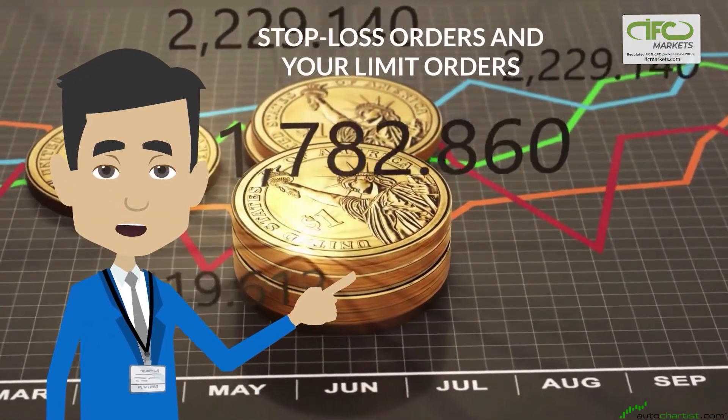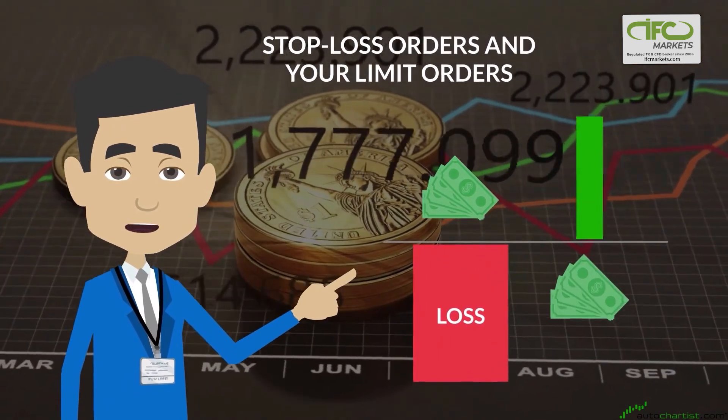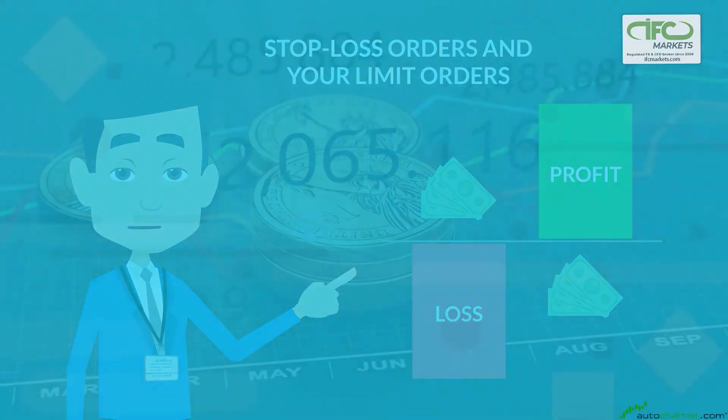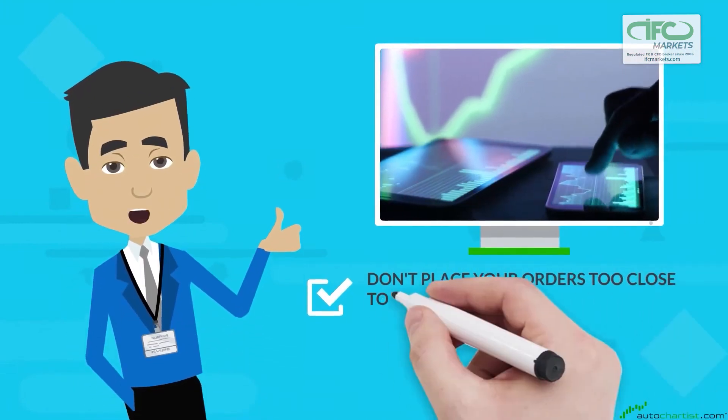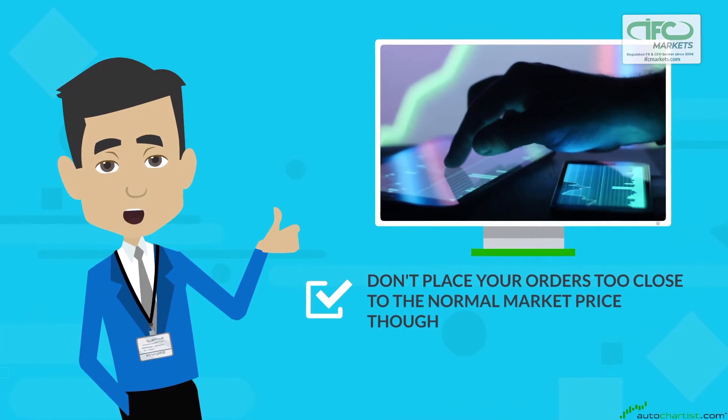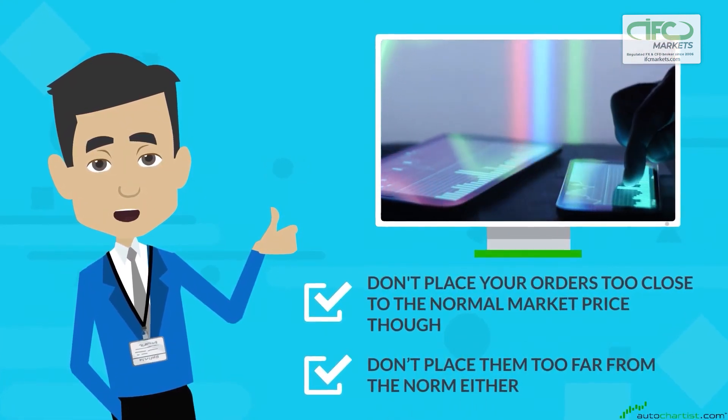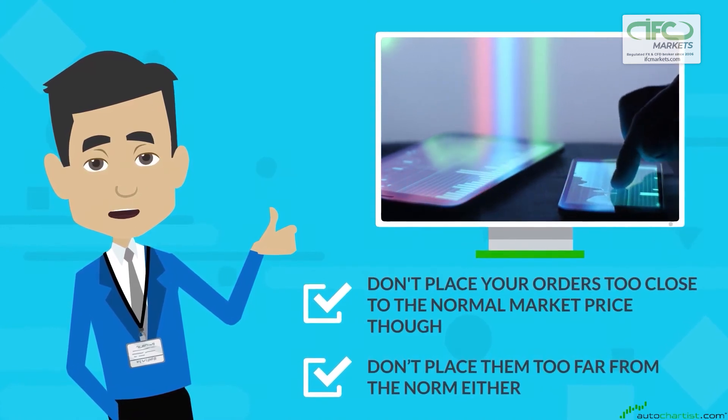When you place your stop-loss orders and your limit orders, you must decide how much loss is too much and how much profit is enough. You should not place your orders too close to the normal market price though, because any little fluctuation could trigger one of them. However, you don't want to place them too far from the norm either, since the further away you get, the more risk you are taking.